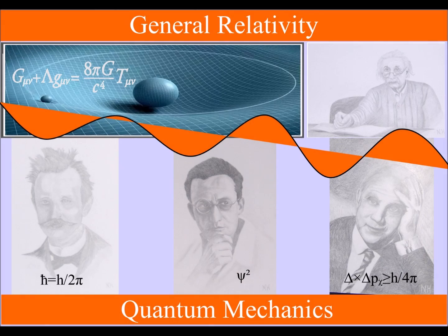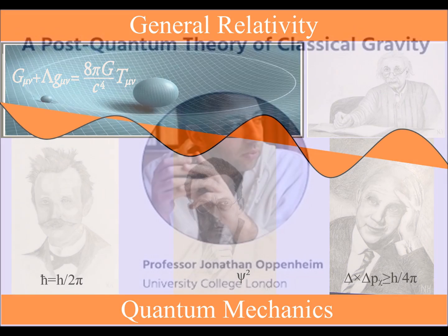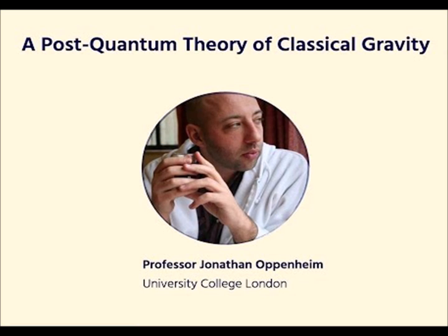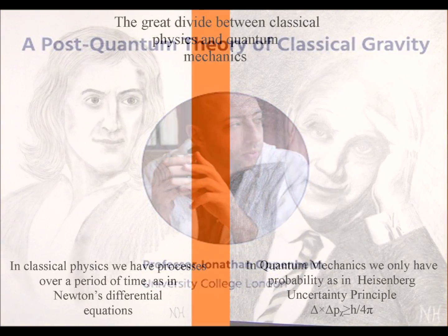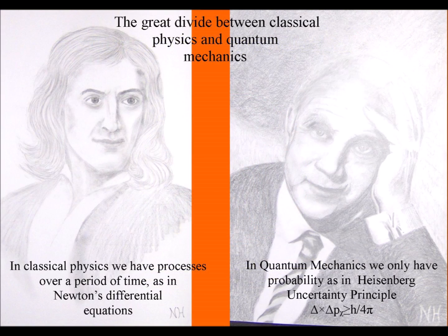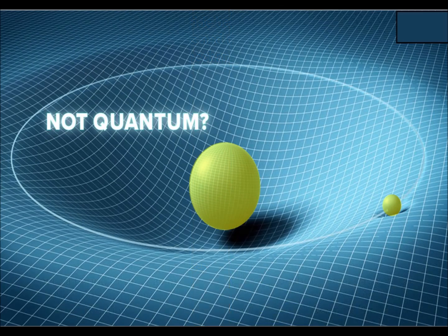A new research paper has managed to link quantum mechanics and relativity together. It is called post-quantum gravity. It takes the uncertainty of quantum mechanics and gives the same uncertainty or random aspect to gravity.